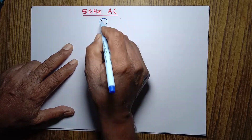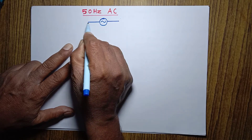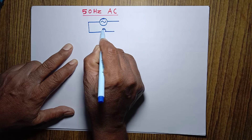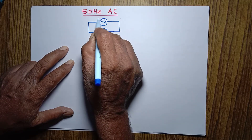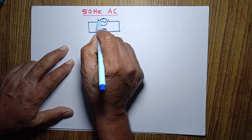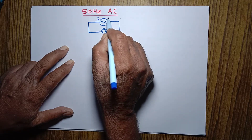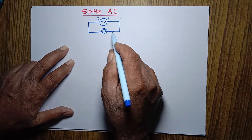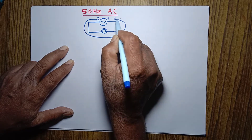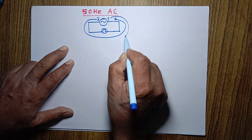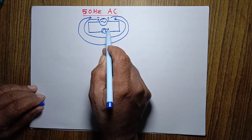Let's take an example of an alternating current source — a source which supplies alternating current — connected to a bulb. Alternating current means the direction of current keeps on changing in the circuit. Once this terminal becomes positively charged, current flows one way; within a fraction of a second, the terminals reverse and current flows the other way. This way the direction of current keeps on changing in the circuit.